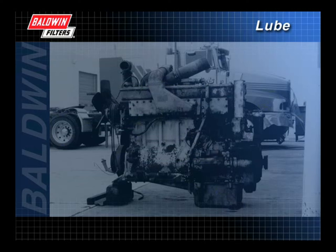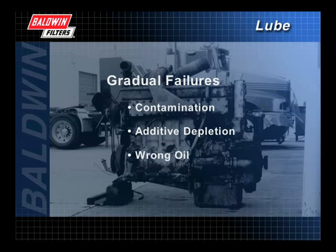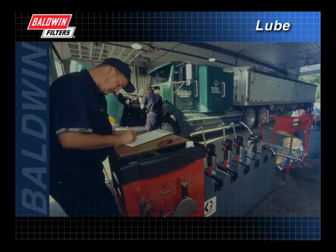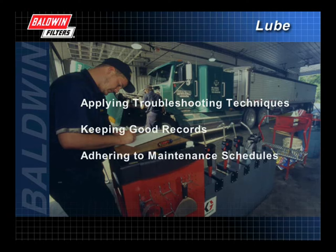It's more difficult to find a cause for gradual failures. They are characterized by accelerated wear or corrosion resulting from contamination, additive depletion, oil of the wrong weight or classification, or any combination of those causes. By applying some basic troubleshooting techniques, keeping good records, and adhering to maintenance schedules, you can avoid serious breakdowns.